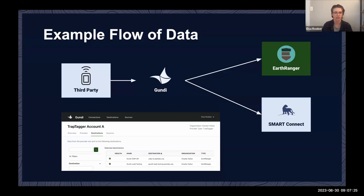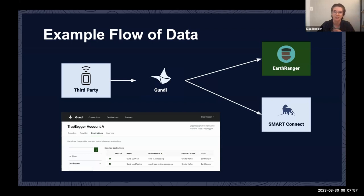Here's a data flow infographic showing a source to a destination. You've got your third-party device — be that a fence sensor, water meter, tracking collar, camera, radio, or geo events. All of these export data in their own format; none of it is standardized. With a Goondi connection, the source exports its data, which is transformed into an intelligible format, and the Goondi portal delivers it to the user's destination — whether that's EarthRanger, Smart Connect, or several others.